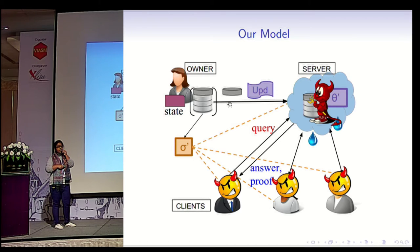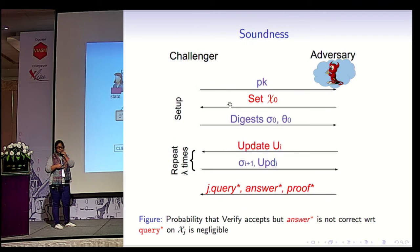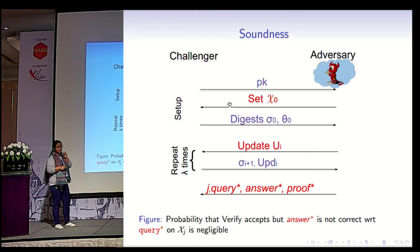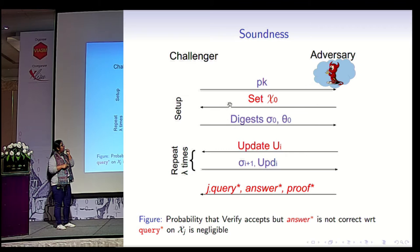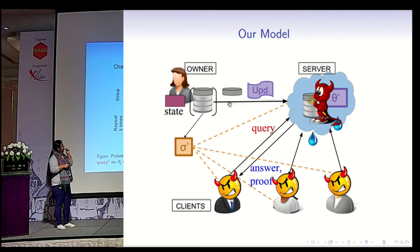I am going to model the security properties directly. The first property is soundness, as you would expect — this is for the adversarial server. In the initial setup phase, the adversarial server receives the public key from the challenger and later comes up with a set of its choice after looking at the public key. As a response, it gets back the digests — the public digest that the owner publishes, the purple box and the orange box.